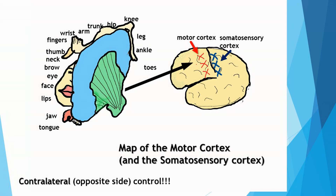As you examine it, you'll see that the body parts drawn the largest — and therefore having the most brain tissue devoted to their movements — are the lips and the fingers. If you think about it, our fingers are capable of fine motor movements, so more brain tissue is devoted to the movement of our fingers than, say, the small of our back.